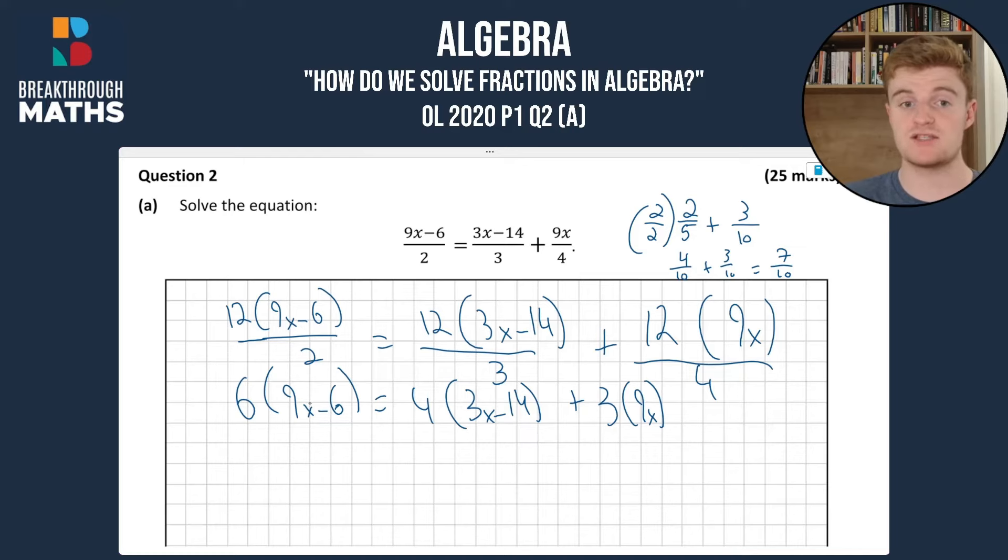Now we can multiply out our brackets, and we're going to do the term outside multiplied by all the terms inside. So we have 6 by 9x will give us 54x, 6 by minus 6 will give us minus 36, 4 by 3x will give us 12x, 4 by minus 14 is minus 56, plus 27x.